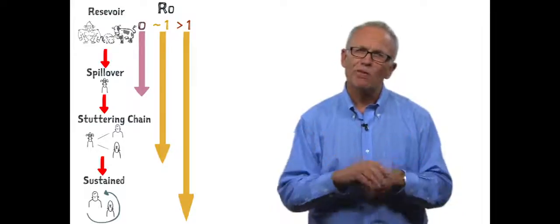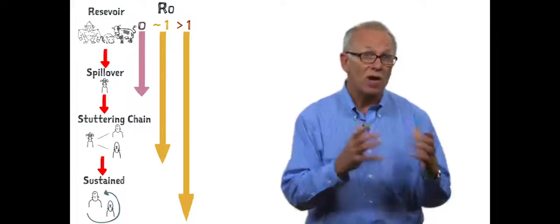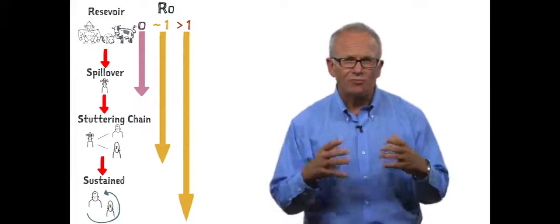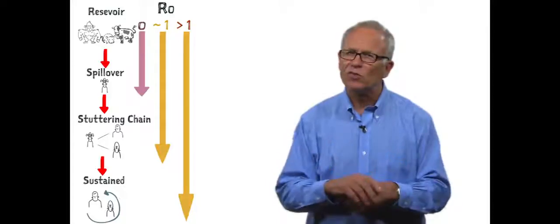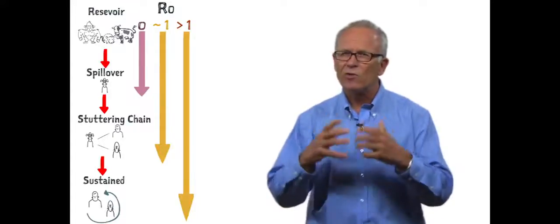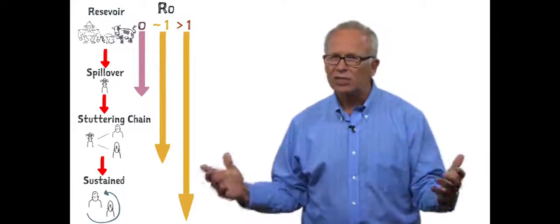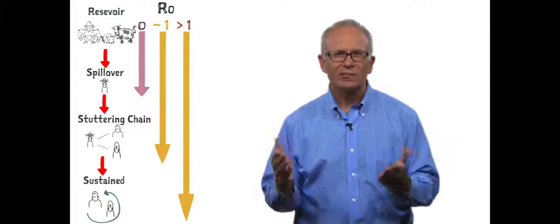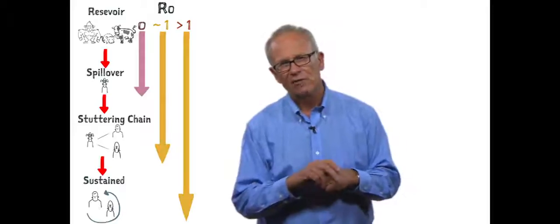One example of this is Ebola virus, where it spills over from some wild host species into the local population and spreads rapidly, killing a high proportion of people in the local community before effectively burning out and disappearing. It is simply too virulent to generate a sustained and persistent infection in the human population.